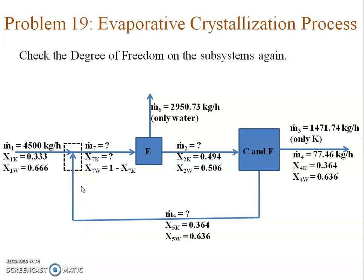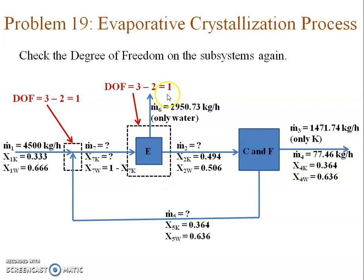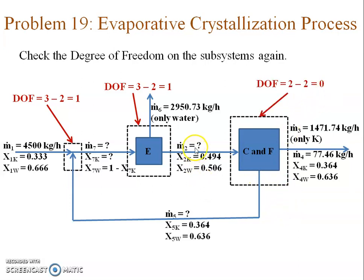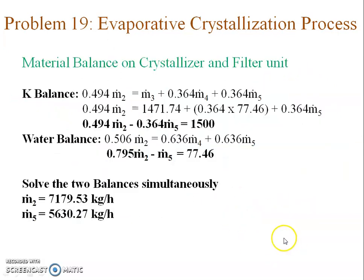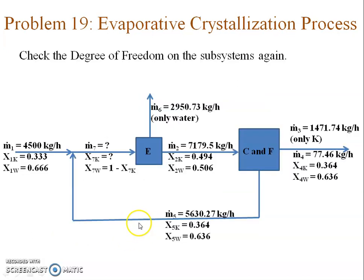Repeating degree of freedom analysis after the update: mixing point still has degree of freedom one. At the evaporator, knowing m6 reduces the degree of freedom to one. At the crystallizer and filter unit, degree of freedom is now zero — two unknowns m2 and m5 with two independent material balance equations. Taking k balance and water balance on the crystallizer unit gives two equations in m2 and m5, which I solve simultaneously to obtain both unknowns.